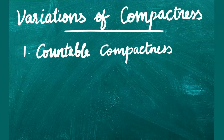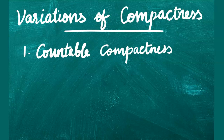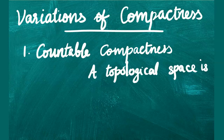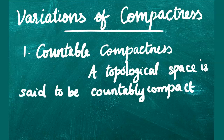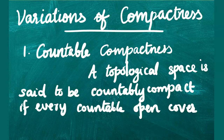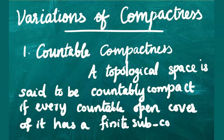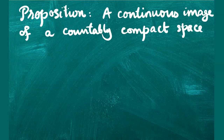Variations of compactness: we have already studied compact spaces. There are other topological conditions of varying strengths which resemble compactness, and we will be studying a few of them in this section. The first type is countable compactness. As the name suggests, a topological space is said to be countably compact if every countable open cover of it has a finite sub-cover. It is obvious that every compact space is countably compact.